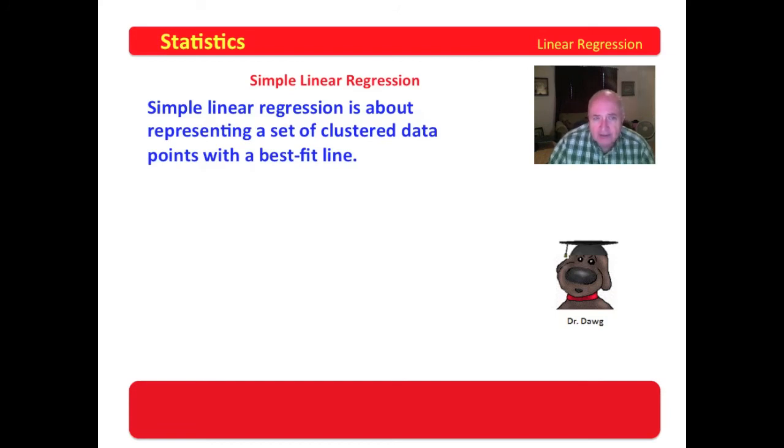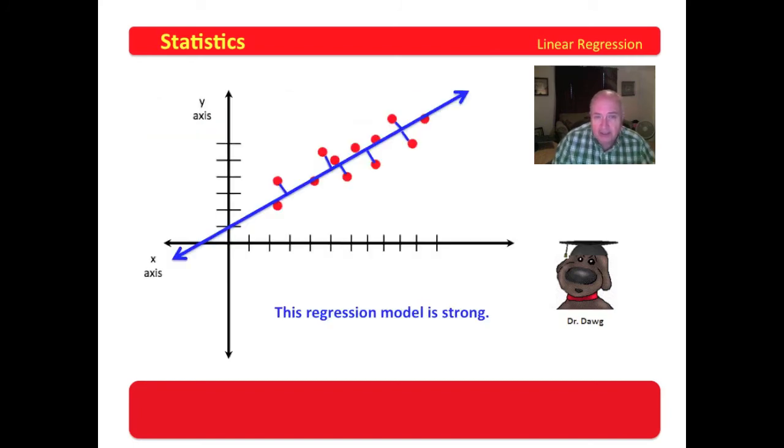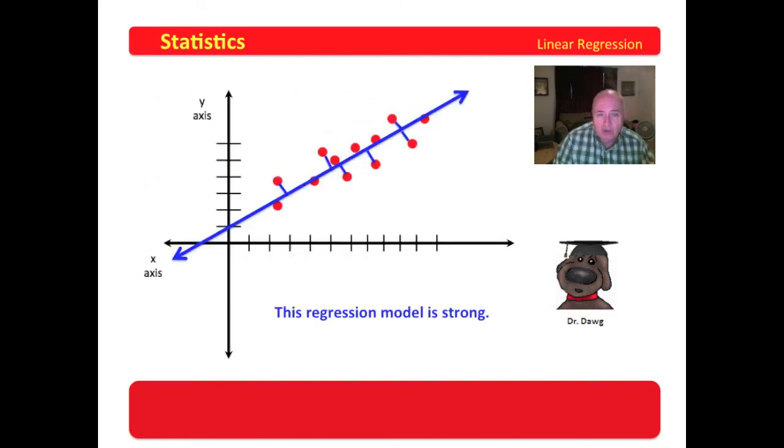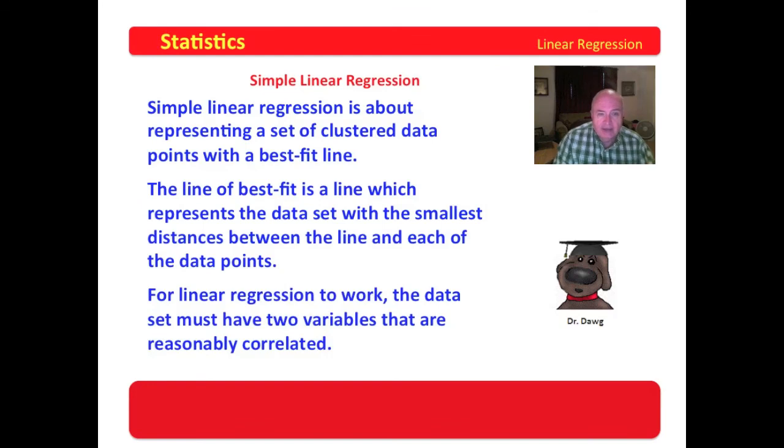Simple linear regression, again, is about representing a set of clustered data points with a best fit line. That's what we did here. We represented it with a best fit line. Simple linear regression, the line of best fit is a line which represents the data set with the smallest distances between the line and each of the data points. Now, we could draw a lot of lines, but this line minimizes these distances. And for linear regression to work, the data set must have two variables that are reasonably correlated.